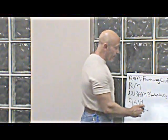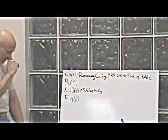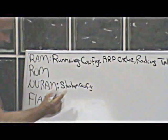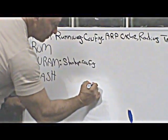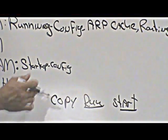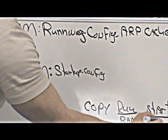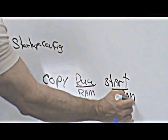Startup config is the main thing to pay attention to. The command is 'copy run start.' Run is the running config, and start is the startup config. You're telling the router to copy whatever's in RAM to NVRAM. That's all you're doing.